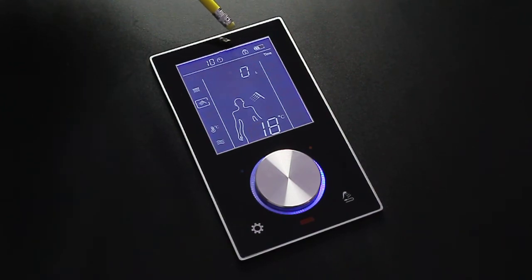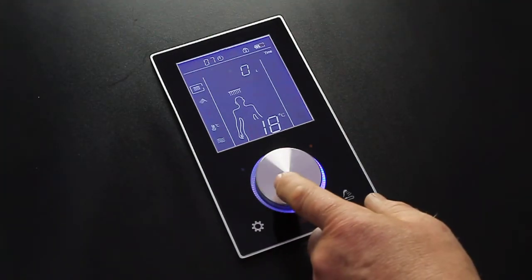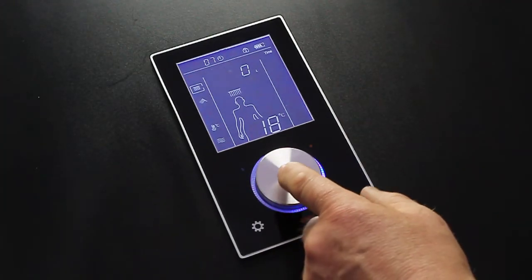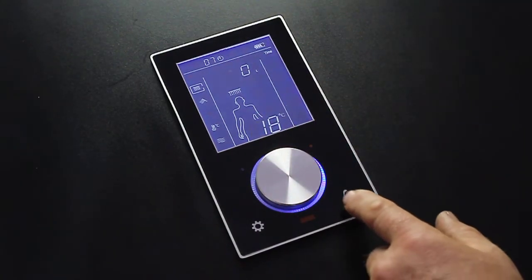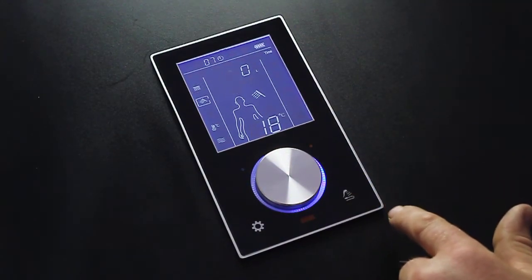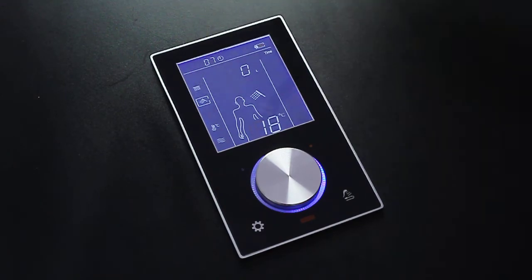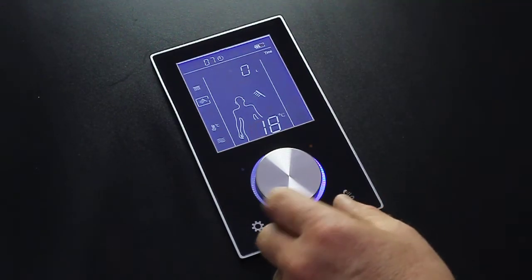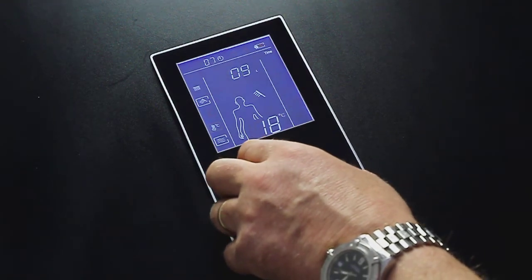To change between shower functions, for example from overhead shower to handheld shower, you push the middle button to unlock and then press the function key. If you want to change the litres per minute you just turn the control wheel clockwise to increase and anti-clockwise to decrease.